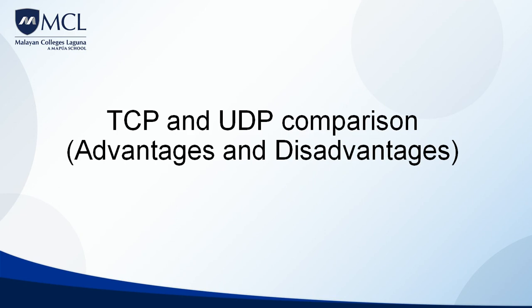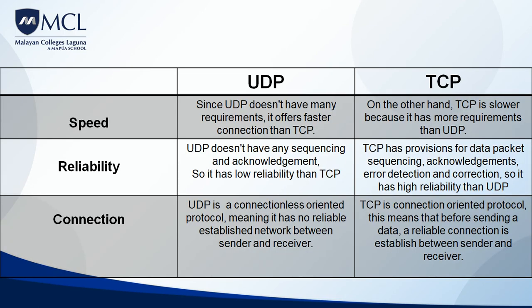Let's compare the advantages and disadvantages of TCP and UDP in terms of speed, reliability, and connection. For speed, UDP has the advantage. Since UDP doesn't have many requirements — it only has four fields: source port, destination port, length field, and checksum error — its size is only 8 bytes (64 bits). TCP has additional fields like sequencing number (16 bits), acknowledgement number (16 bits), and error correction (16 bits), making its file size larger. So when it comes to speed, UDP is preferred.